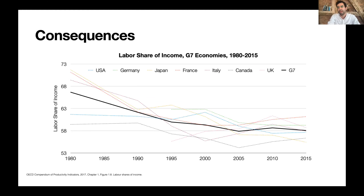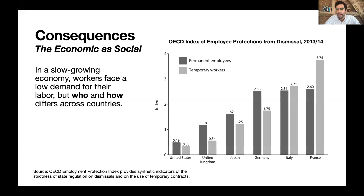It's important to note that even in a slow-growing economy with low demand for labor, who bears the burden and how differs significantly across countries. The OECD index measures employment protections from dismissal on a scale of zero to six. In the US, workers are hired and fired at will — they have very few job protections, so all workers, with the exception of tenured professors and some unionized workers, are subject to labor market fluctuations.